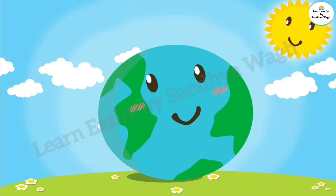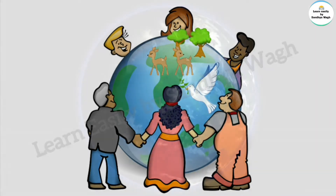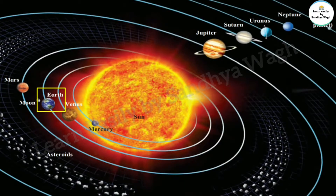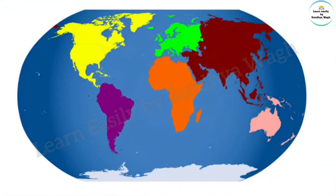So students, this is our Earth. Do you know how old our Earth is? It is about 4.54 billion years old. As the Earth is located at a convenient distance from the sun, it is neither too hot nor too cold. Land covers one third of the Earth's surface. The major land masses are called continents.